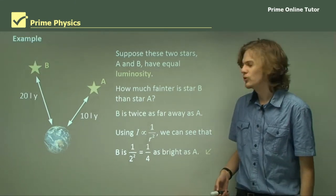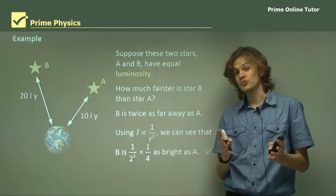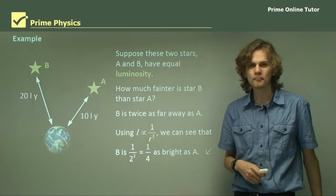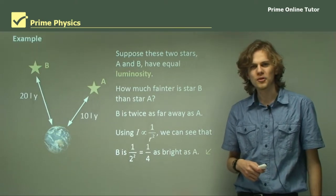That's called the inverse square law because we have 1 over, so it's inverse, and we have the square of the radius. That's the end of the theory. We've learned about the inverse square law and the difference between brightness and luminosity. Let's go on to some questions.